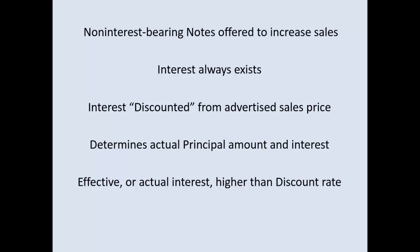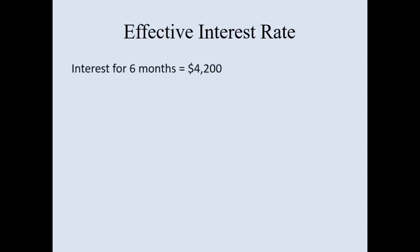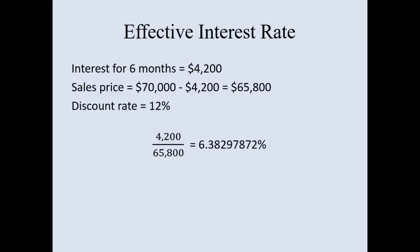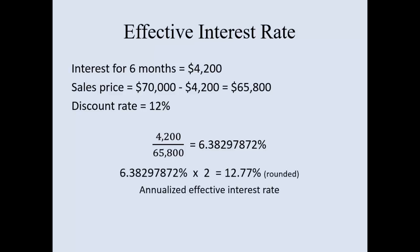You'll hear the term effective interest rate — it's the actual interest rate and it's usually higher than the discount rate. So what is the effective interest rate? Your interest for six months was $4,200; the sales price was $70,000 minus the discount, so the actual sales price for the product was $65,800. You advertised $70,000 because of the interest discount rate of 12%. Take $4,200 divided by the actual sales price and that gives you your actual effective interest rate — this is why it's higher than the discount rate.